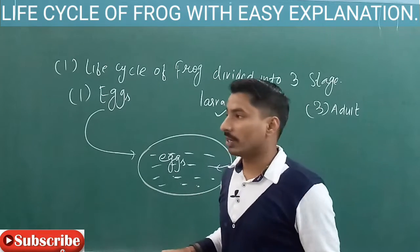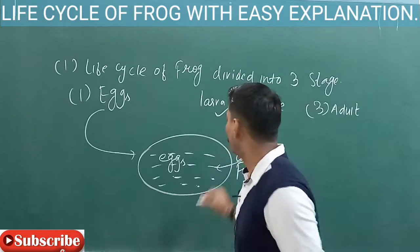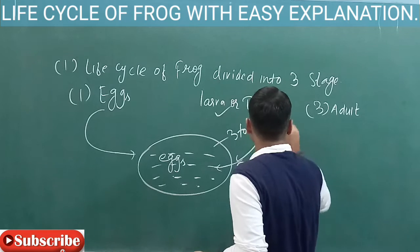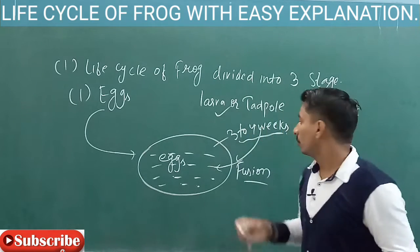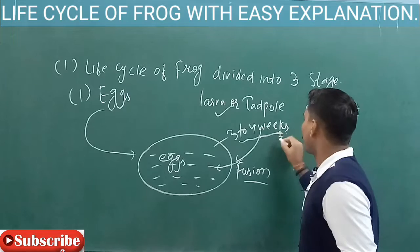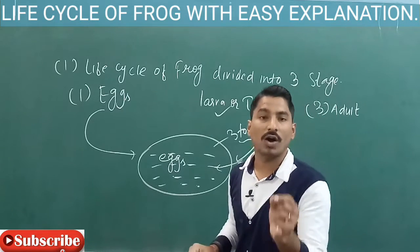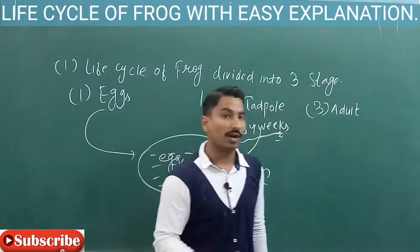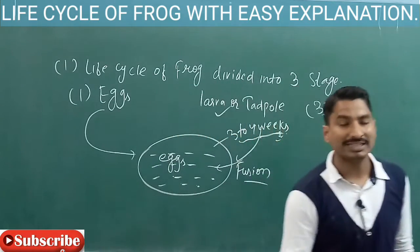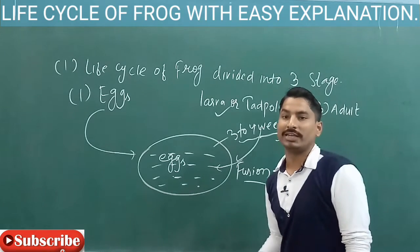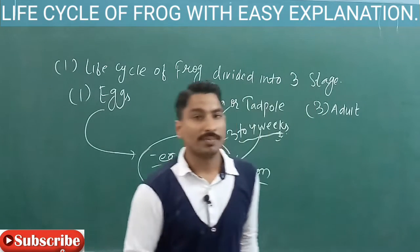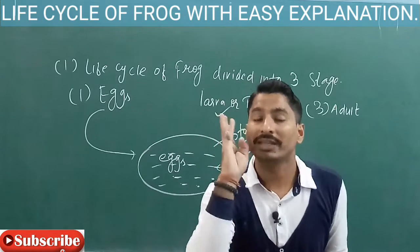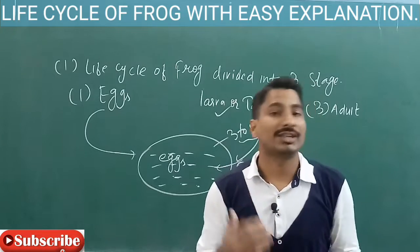When larva formation happens, it takes three to four weeks. So you can remember: the time duration for the formation of larva or tadpole is three to four weeks. At the larva stage, there is an absence of functioning gills and skin — because the larva has only gills, which help in the exchange of gases.